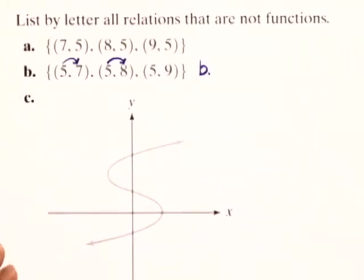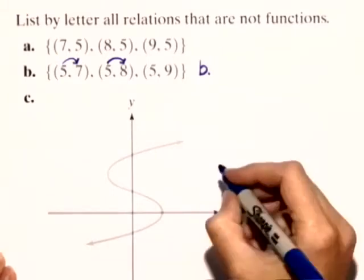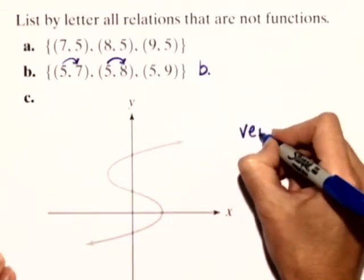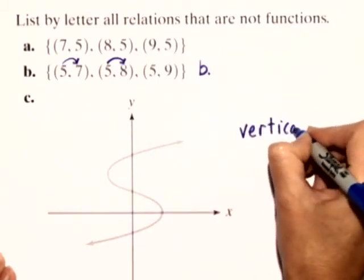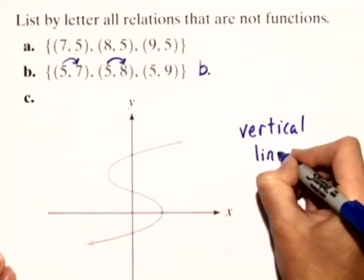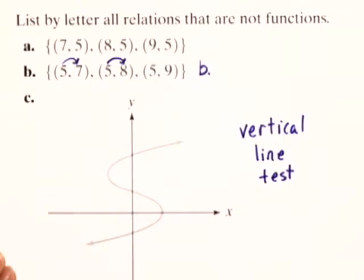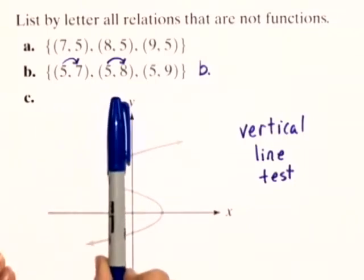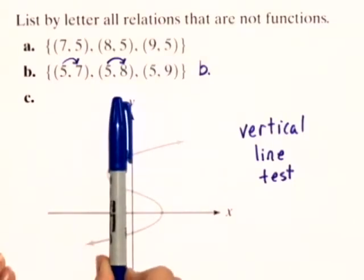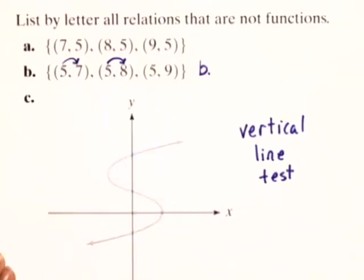Now let's look at C. In this case, we're not given a list of ordered pairs, so we have to figure out a different way to determine whether or not it's a function. And what we'll do is a vertical line test. Here's what the vertical line test says. It says, if you can take a vertical line at any point on the graph and it touches the graph in more than one place, then this does not represent a function.